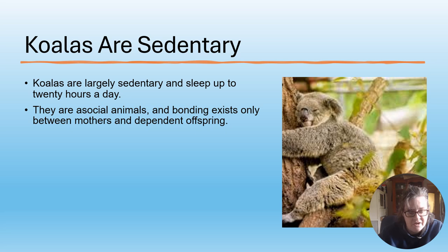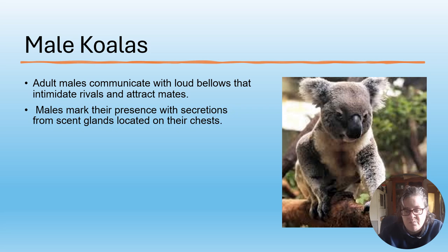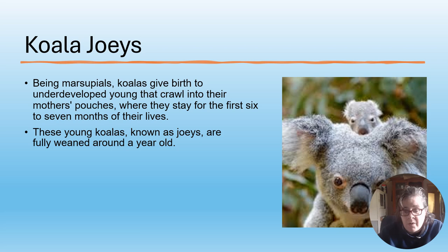Koalas are mostly asocial and not really sociable animals. Male koalas are bigger than females, so koalas are sexually dimorphic. Adult males communicate with loud bellows that intimidate rivals and attract mates, and males mark their presence with secretions from scent glands located on their chests.